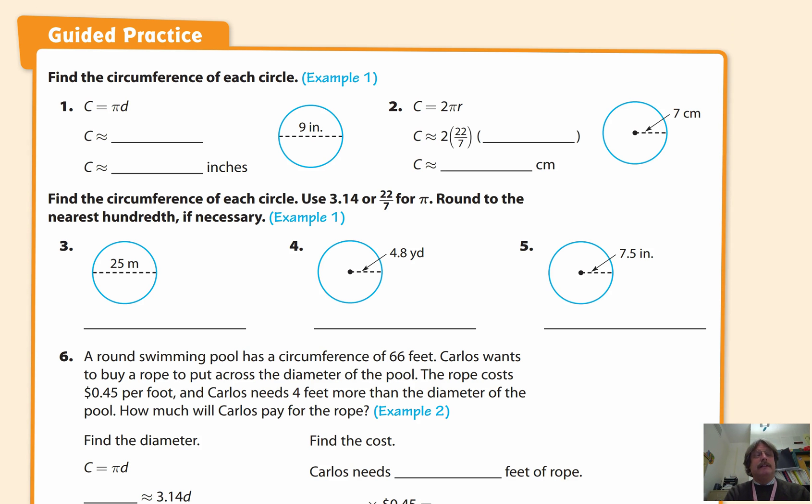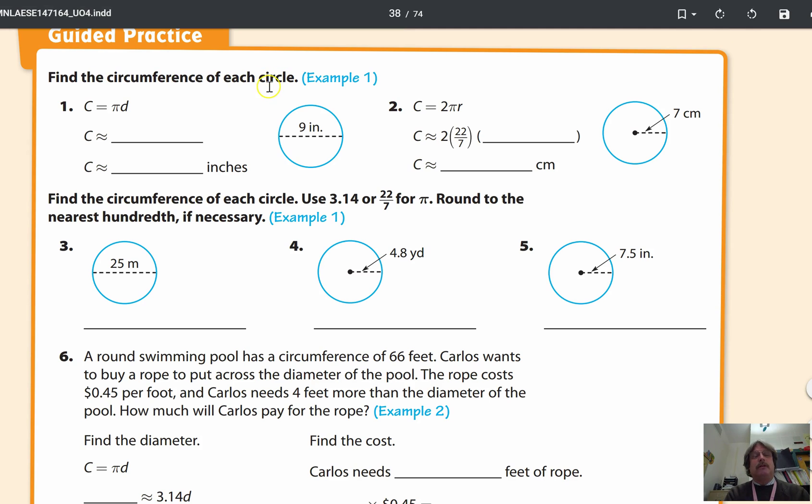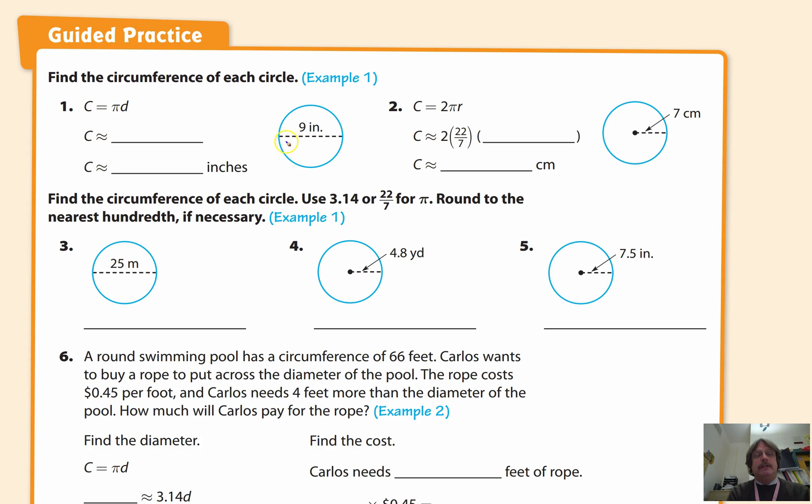So here in the guided practice, it says find the circumference of each circle. So that's an example I told you about earlier. They just give you the circle. Here's the formula. Circumference equals pi D. So you go ahead and you take the 9 inches. That's the diameter right there. That symbol all the way across is diameter. So you're going to take that, and you're going to substitute it in there and do the calculation. Here, you have to look at the number 2. You look in the figure, and you see that you're given the radius. So we use the 2 pi r to find the circumference. You take that, and you go ahead and substitute that in for the radius and do the calculation.